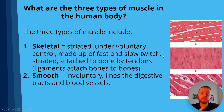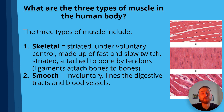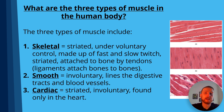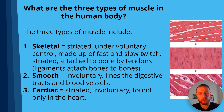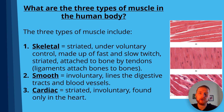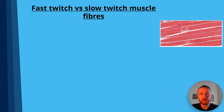The second type of muscle is smooth muscle, which is involuntary and lines the digestive tracts and blood vessels. Finally we have cardiac muscle. This is also striated just like skeletal muscle, however it's involuntary rather than voluntary, which means it's not under conscious control, and it's found only in the heart.